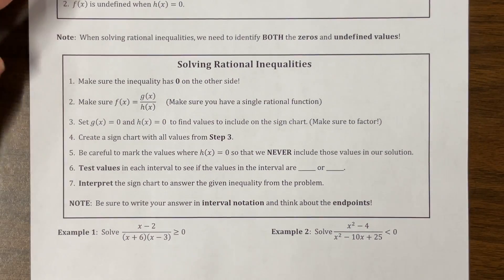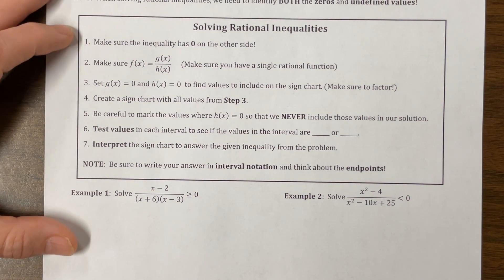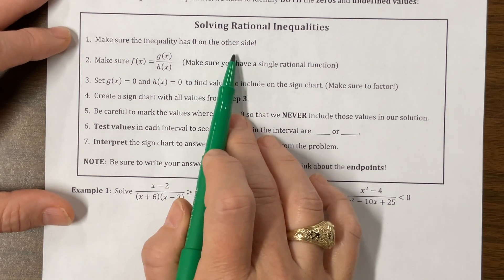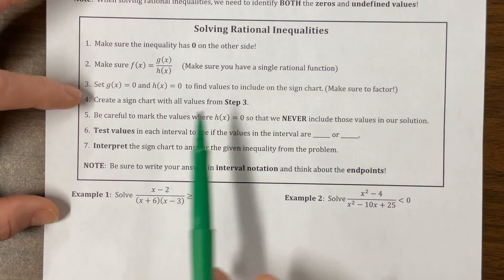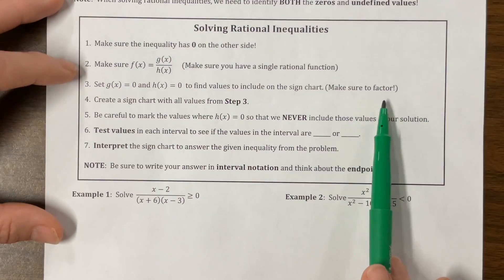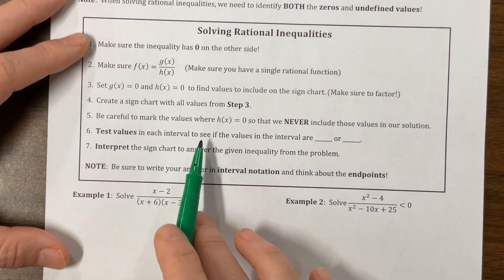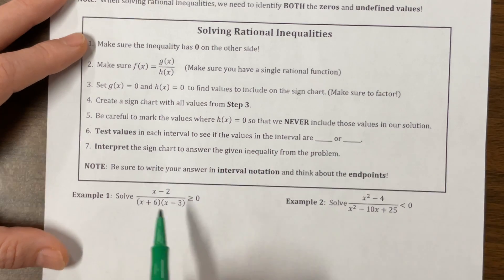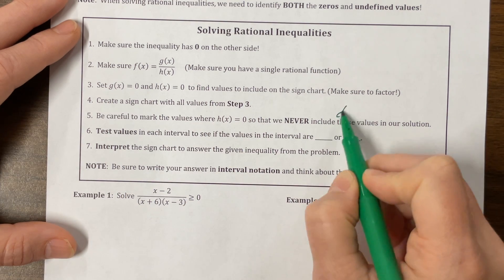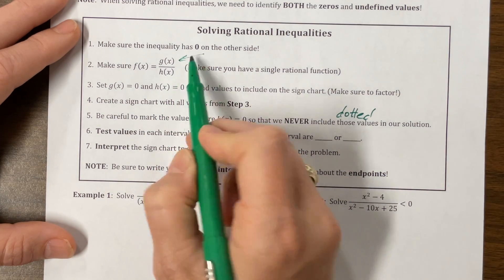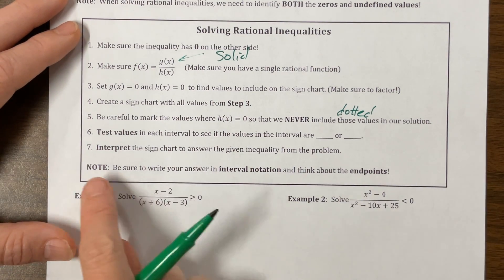So now we want to solve some inequalities, and we love to do these sign diagrams. The things we need to consider: make sure the inequality has zero on the other side — life gets hard if that's not the case. Make sure you have something over something — one rational function. And figure out anywhere that the numerator equals zero or anywhere the denominator equals zero. Create a sign chart with the values. Be careful to mark where h of x equals zero. I would use a dotted line for the denominator zeros, and a solid line for g of x zeros, even if it doesn't allow us to be equal later.